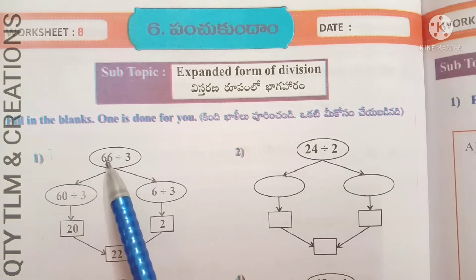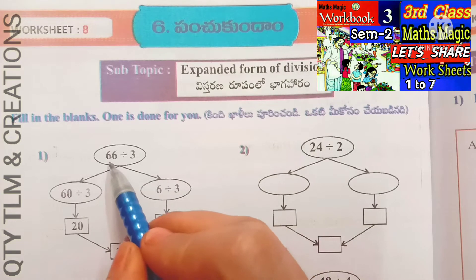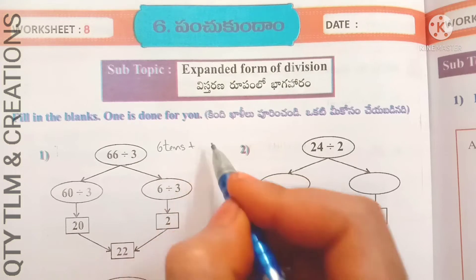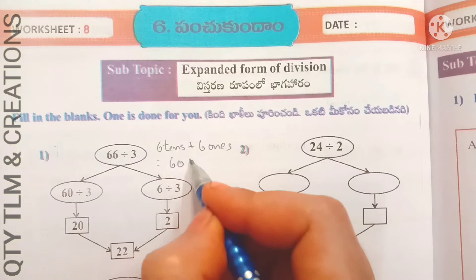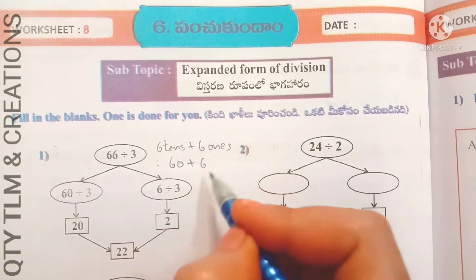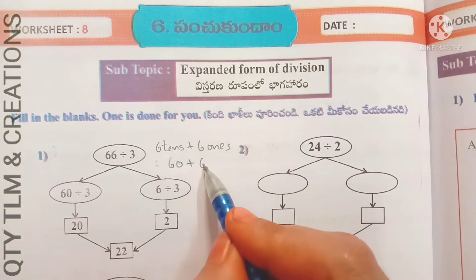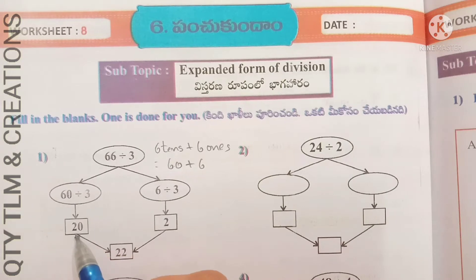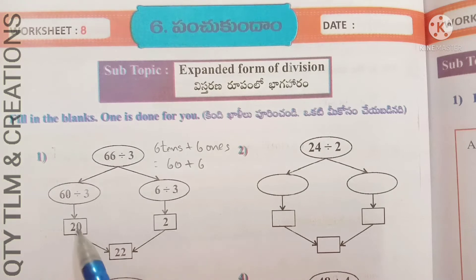First one is 66 divided by 3. The expanded form of 66 is 6 tens plus 6 ones, which equals 60 plus 6. So 60 divided by 3 and 6 divided by 3. 3 divides 60 for 20 times and 3 divides 6 for 2 times. We add 20 plus 2, and we get 22.